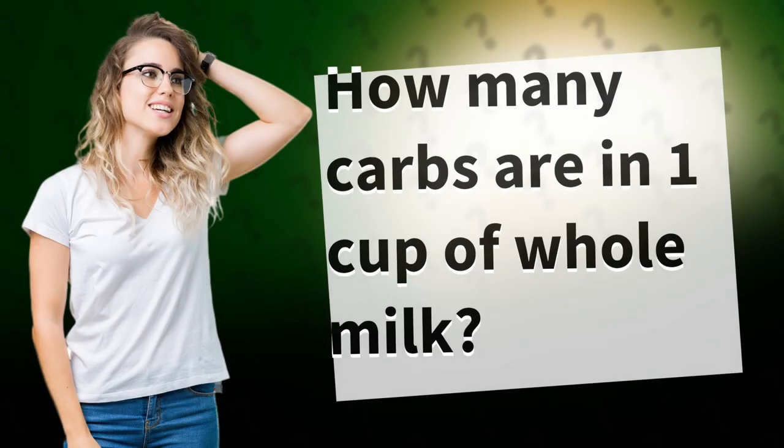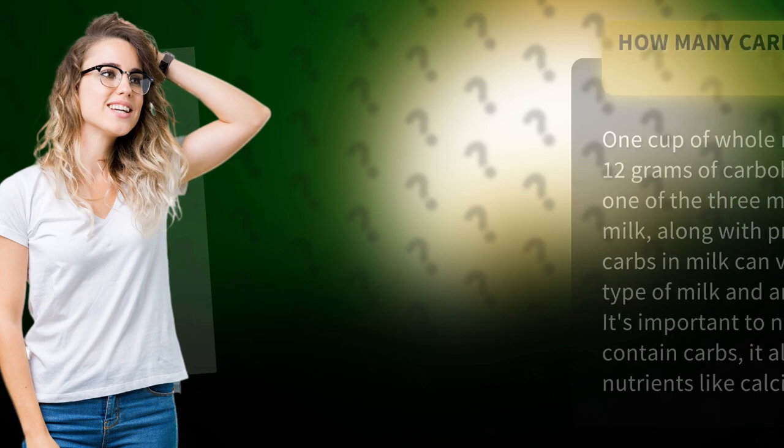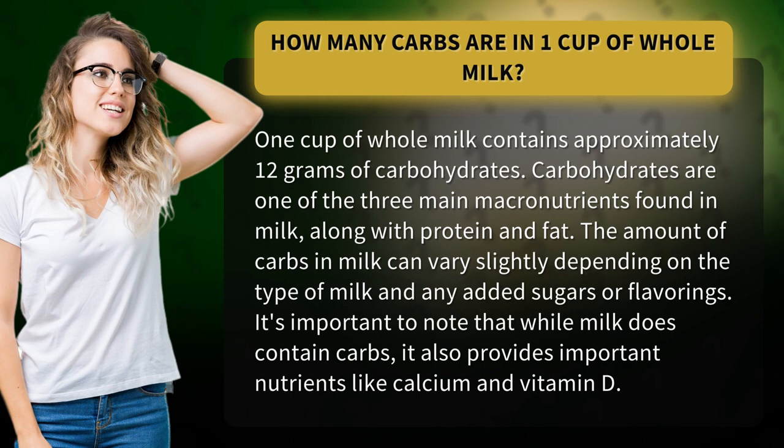How many carbs are in one cup of whole milk? One cup of whole milk contains approximately 12 grams of carbohydrates. Carbohydrates are one of the three main macronutrients found in milk, along with protein and fat.